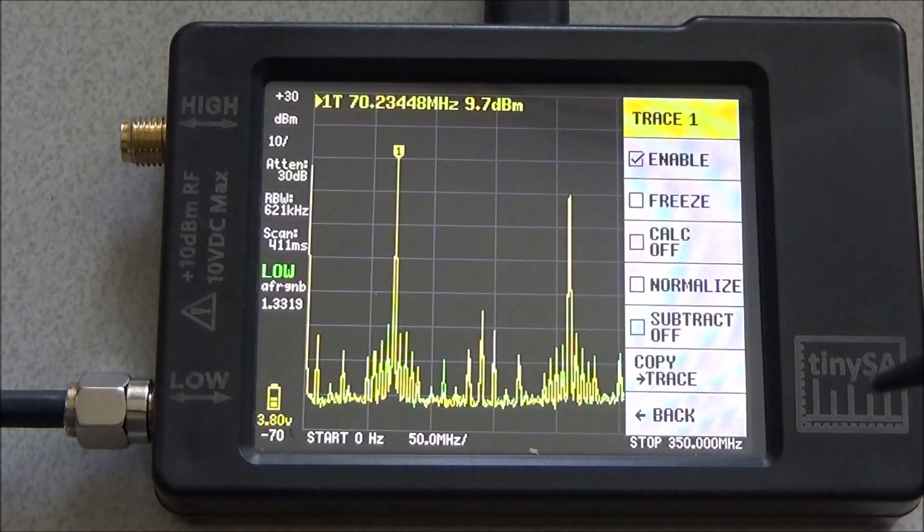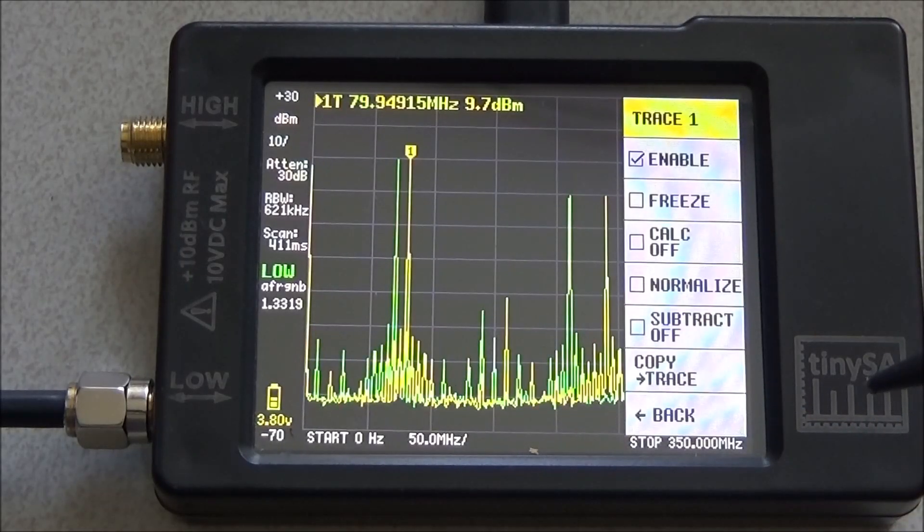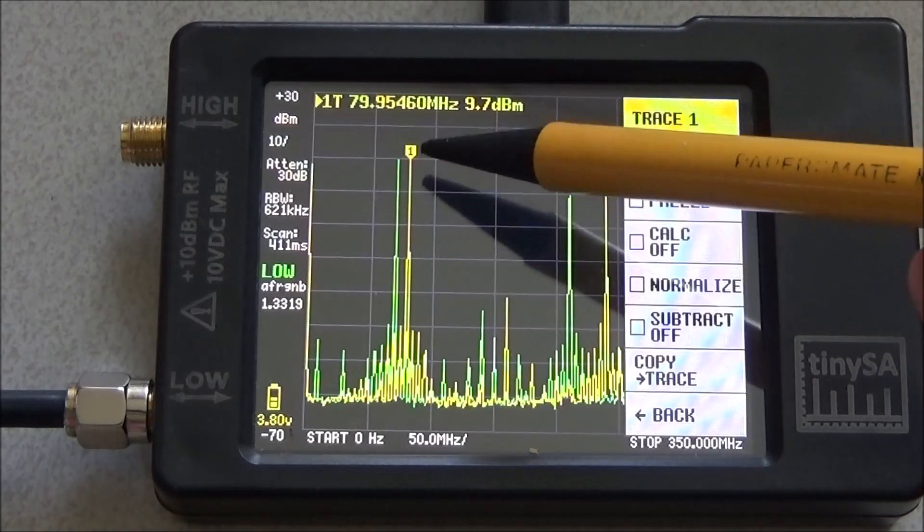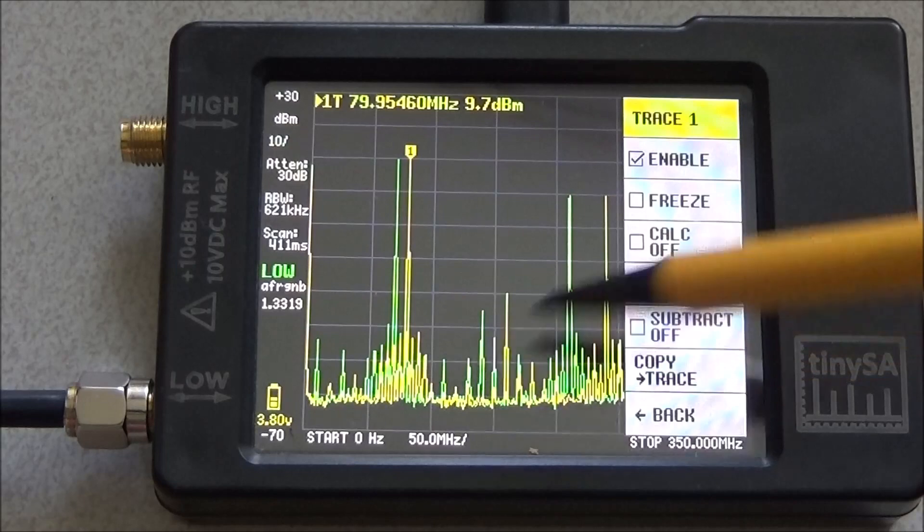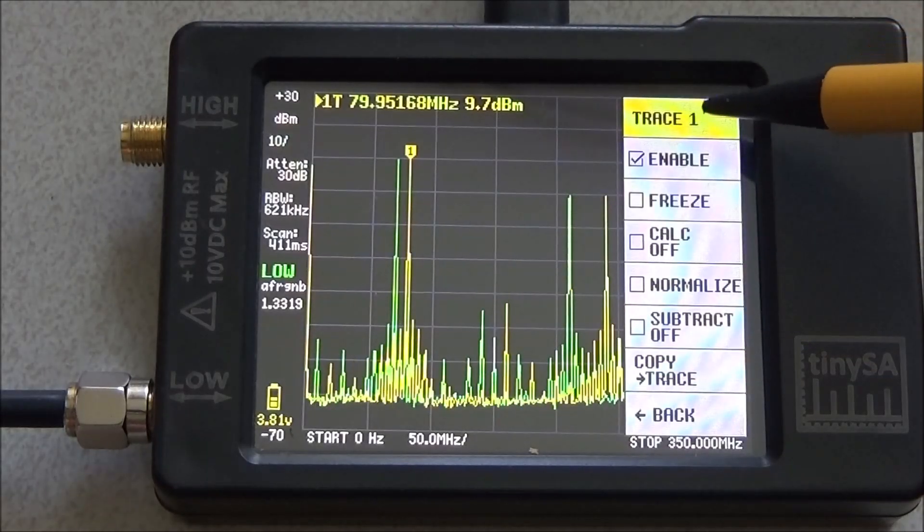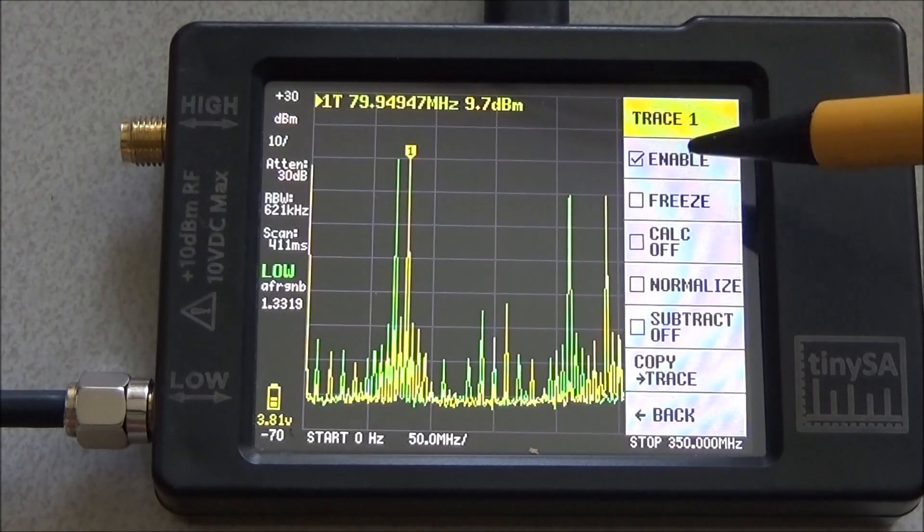Then of course you don't see a lot. But if I change the frequency, you see the previous frequency measurement is stored in trace 2, the green trace, and trace 1 is still the live trace.